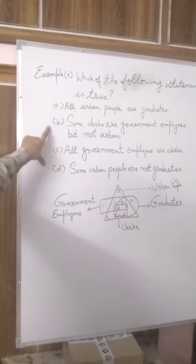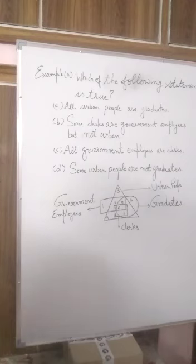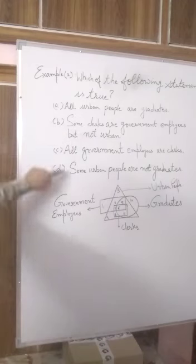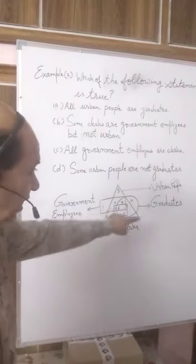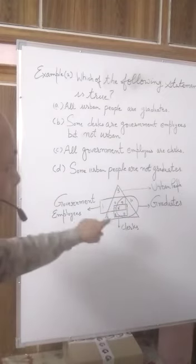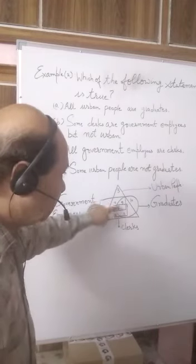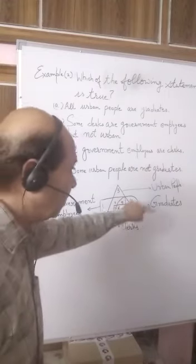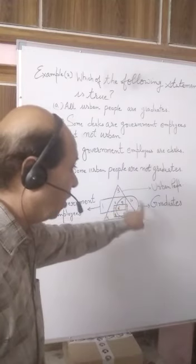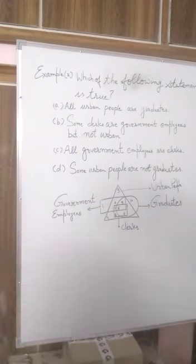Out of options B and D — 'some clerks are government employees but not urban' and 'some urban people are not graduates' — option D gives the most accurate result. The reason is all urban people are represented by the triangle, and the graduates part (the circular regions 5, 6, and 11) is included within the triangle, while only region 10 — graduates — is not included in the triangle. So option D is correct.